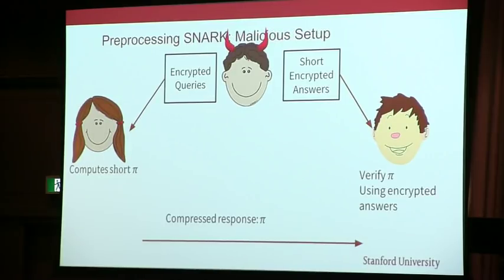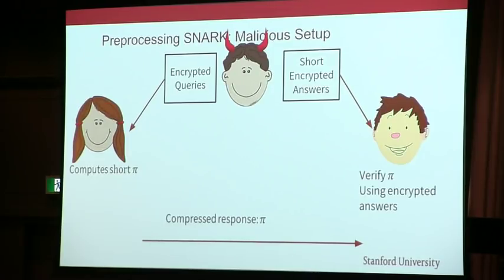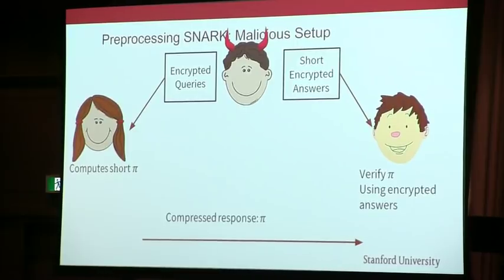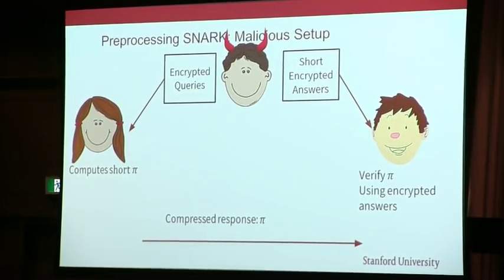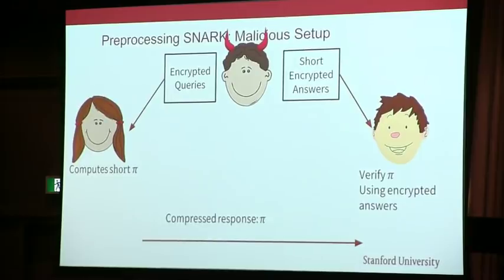If the trusted setup was subverted — if the person who does the trusted setup colludes with a prover — then the prover can compute fake proofs. In Zcash, this would mean that you can spend money, you can create money out of thin air. And this is obviously a terrible situation.